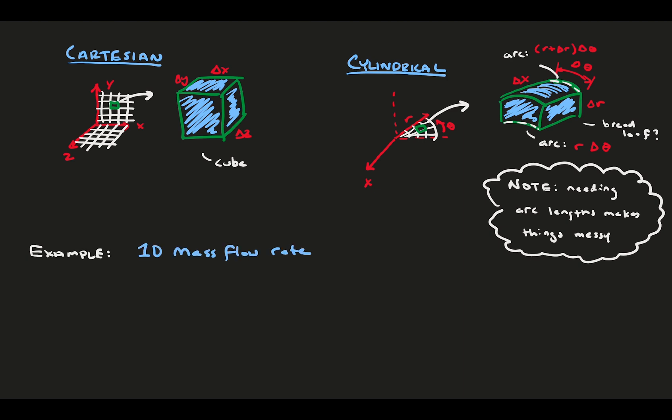To see how cylindrical coordinates changes the equations, let's take a look at a simple example of 1D mass flow rate balance for an incompressible fluid. Mass flow rate is density times velocity times area. We'll divide through by volume because in fluids we like to think of things in terms of per unit volume.